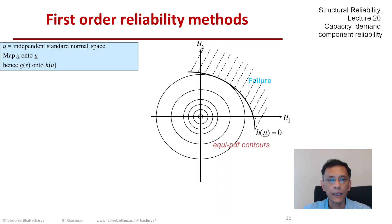In FORM, the objective is the problem statement is to minimize the norm of u subject to h equals 0. In other words, we have to find the minimum distance point from the origin to the line h equals 0.